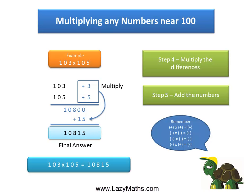So 103 times 105 equals 10,815. And that's it. Thank you.